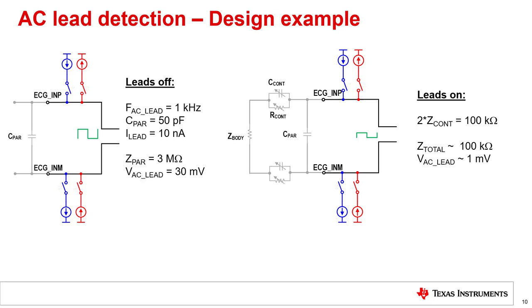Therefore, in a leads-on case, the strength of the 1 kHz tone at the ADC output is significantly lower than for the leads-off case, and this information can be used to determine the strength of the contact of the leads.